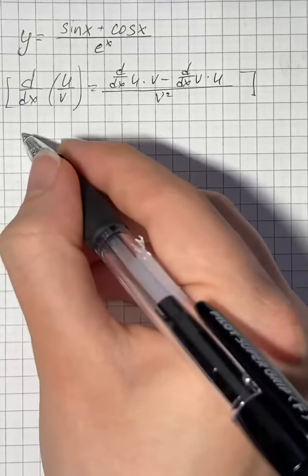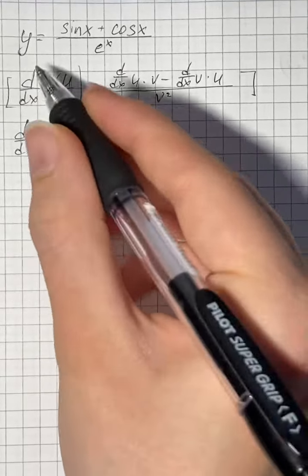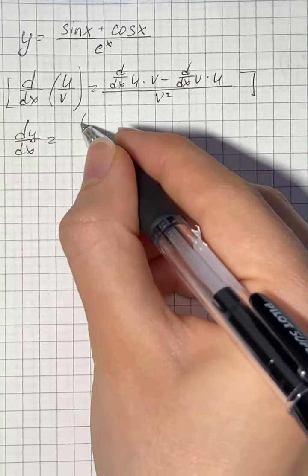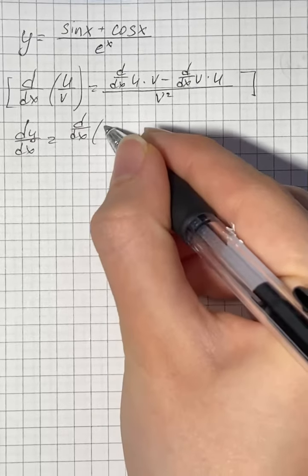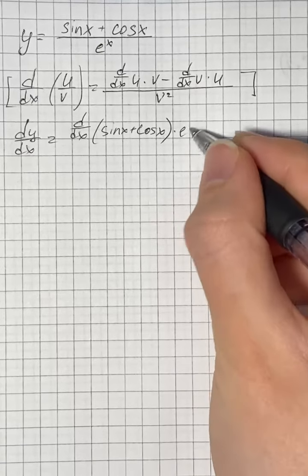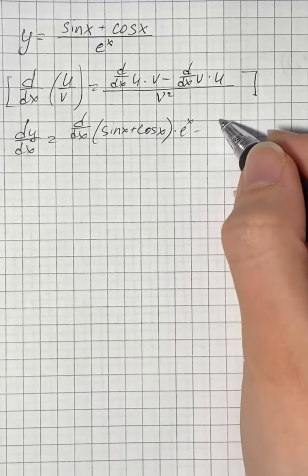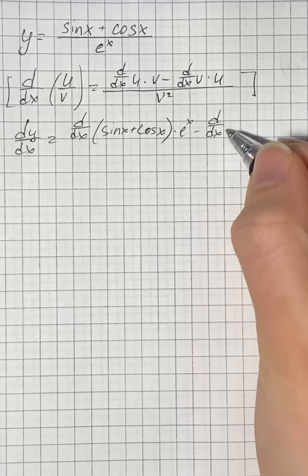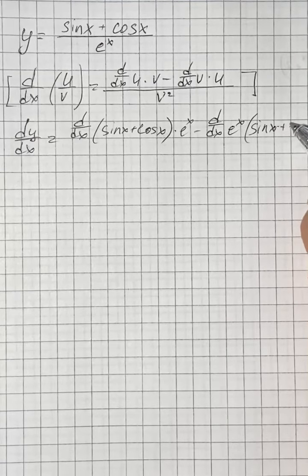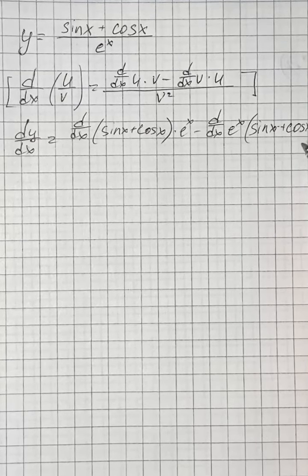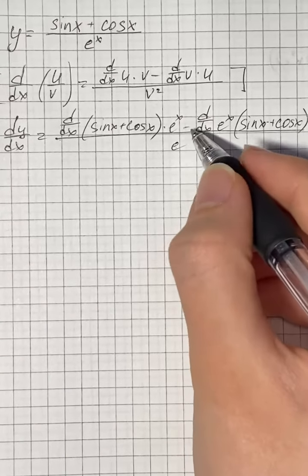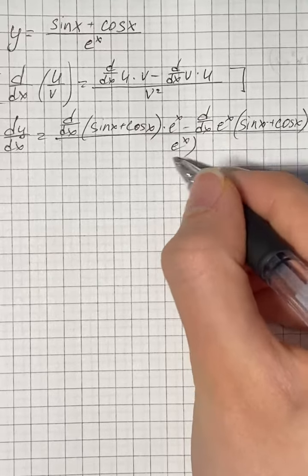So we're going to apply this rule and differentiate our function with respect to x. We get the derivative of sine of x plus cosine of x, times e to the power of x, minus the derivative of e to the power of x times sine of x plus cosine of x, all over e to the power of x squared.